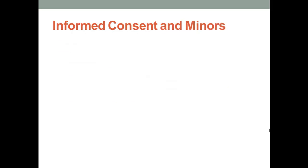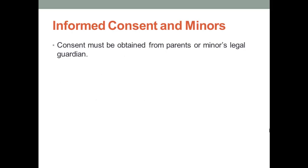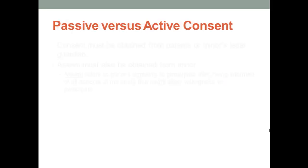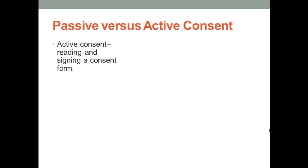Informed consent with minors as research participants involves another step. Informed consent must be obtained from parents or guardians of minors. Also, assent must be obtained from minors who are old enough to have enough intellectual capacity to say they are willing to participate. Assent means that the minor agrees to participate after being informed of all the features of the study that might affect their willingness to participate. So far, we have only talked about active consent — that is, when consent is provided by the potential participant signing the consent form.